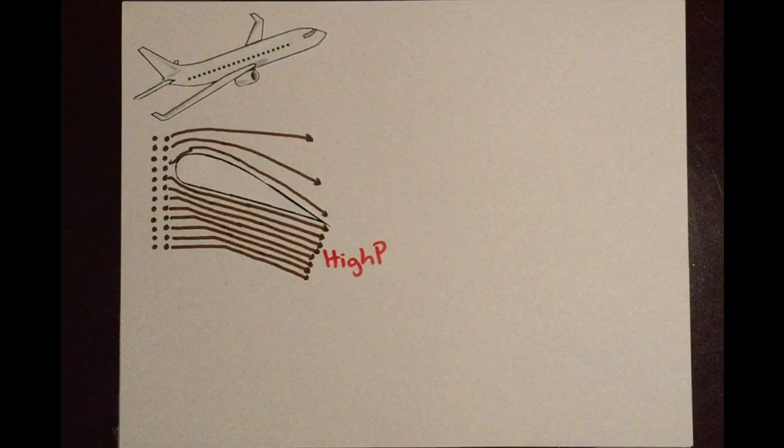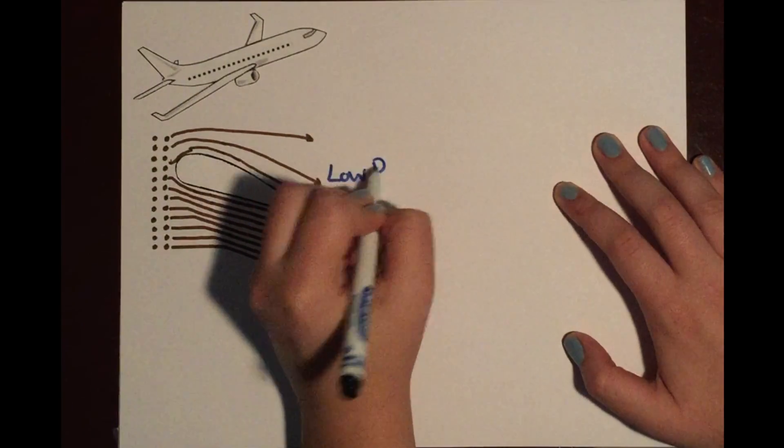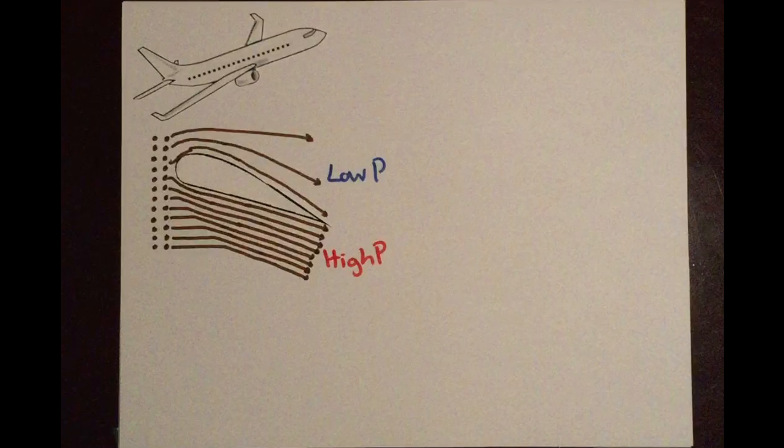The air particles on the top are given more room because the air particles under the wing haven't moved out of the way, which causes a lower pressure. You will also notice that most all of the air particles are being pushed downward, and because of Newton's third law, we know that there must be an equal and opposite reaction to this downward motion, and that reaction is lift.